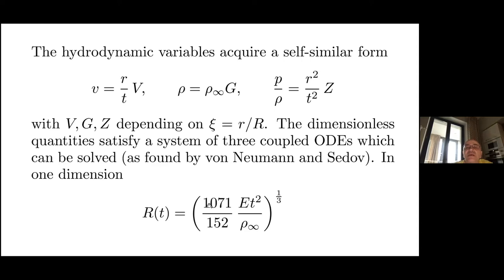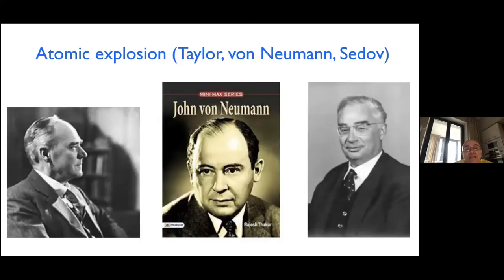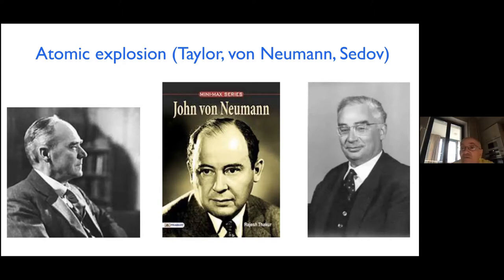In 1D, the amplitude would be about 15% of the naive estimate, so Taylor's trick would have failed. Von Neumann also submitted a report in 1941 on the same formula; hearing that Taylor had the same result, he worked through the weekend and completely solved the problem analytically. Sedov in 1945 also found the complete solution. For a long time it was called the Sedov–Taylor solution, and now people say TVN — Taylor–von Neumann–Sedov.